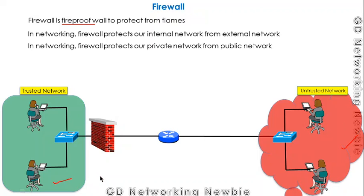The firewall also protects from within the private network — so we call this a private network and the outside a public network. The purpose is the same: the firewall is used to protect our network.